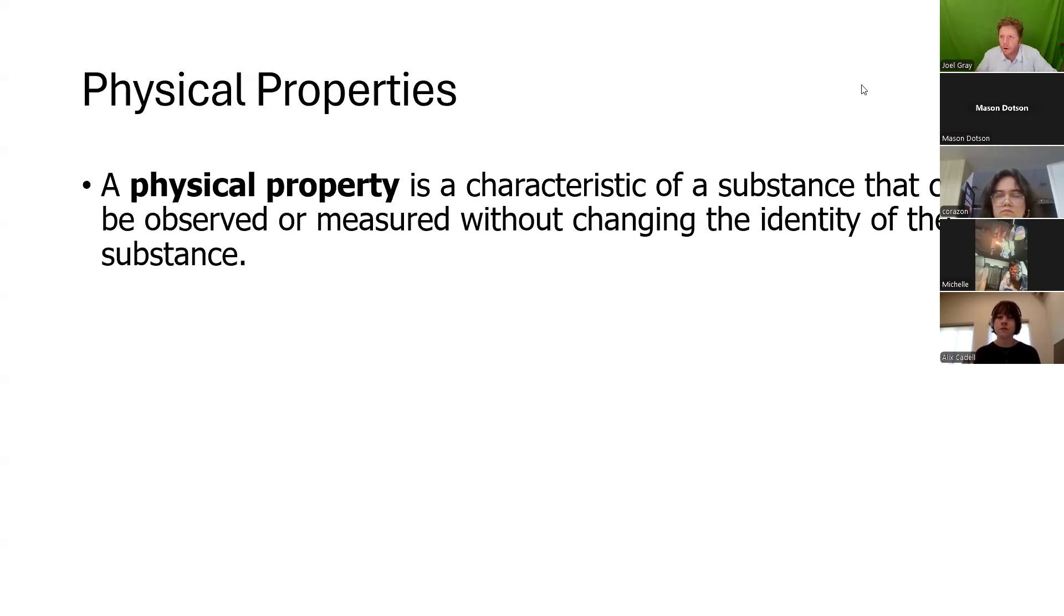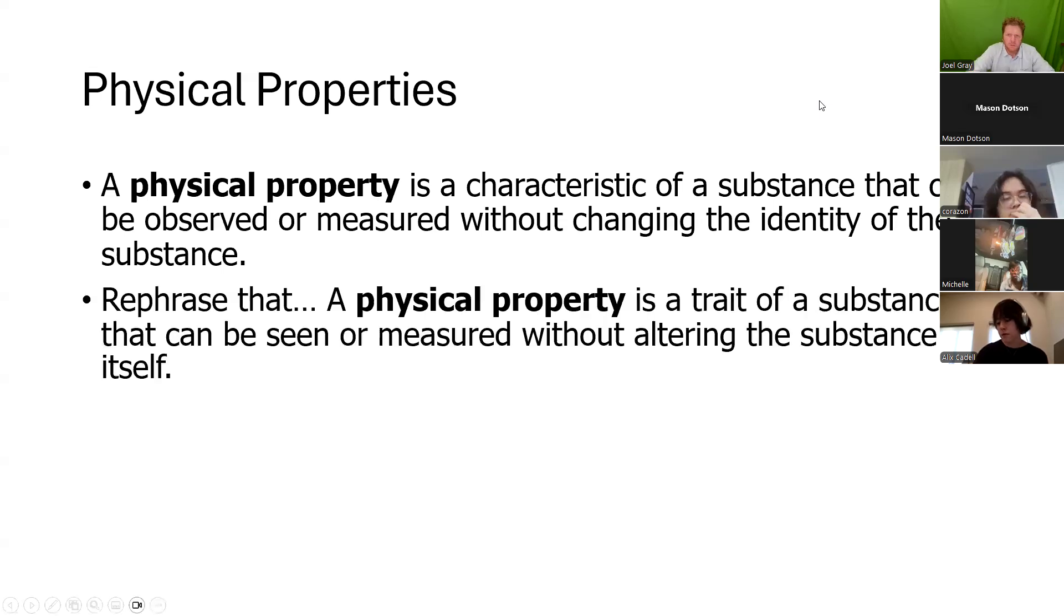A physical property is a characteristic of a substance that can be observed or measured without changing the identity of the substance. Essentially, this can be quantified, so it can be measured and monitored, and that substance doesn't change. Another way to rephrase that is a physical property is a trait of a substance that can be seen or measured without altering that substance itself. What are some examples of physical properties? These are things, terms that you can use to describe a material, a substance.